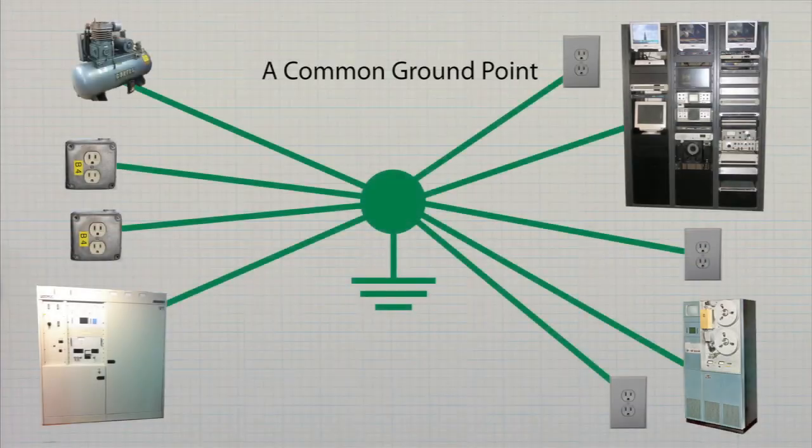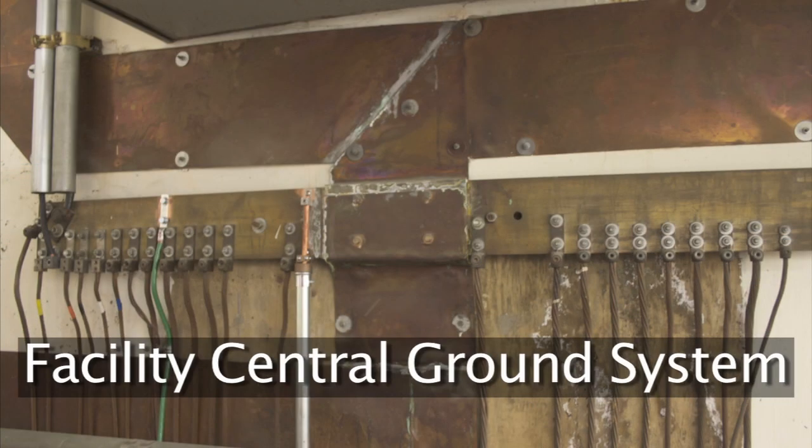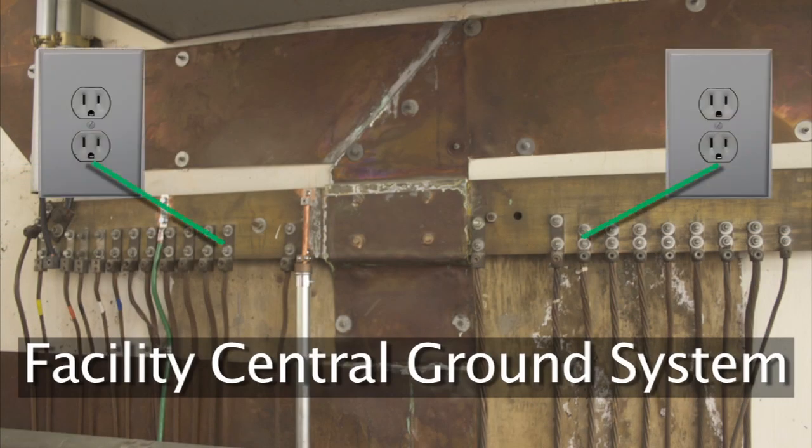The best way to prevent ground loops is by using a centralized grounding system in your facility. All grounds are connected to a single point that has a very low resistance to earth ground.